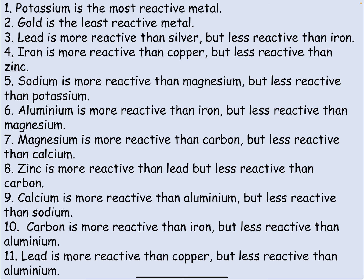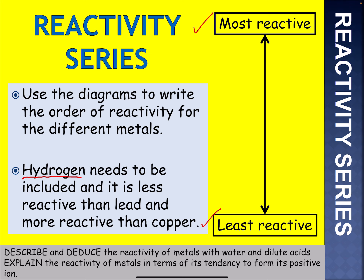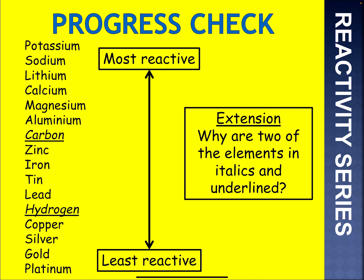This is what you should have got. Reading the statements: potassium is the most reactive, followed by sodium, lithium, calcium, magnesium, aluminium. Carbon fits in between aluminium and zinc. Then iron, tin, lead, and then hydrogen — it's less reactive than lead but more reactive than copper, so that's where hydrogen fits in. Then copper, silver, gold, and platinum are the least reactive.